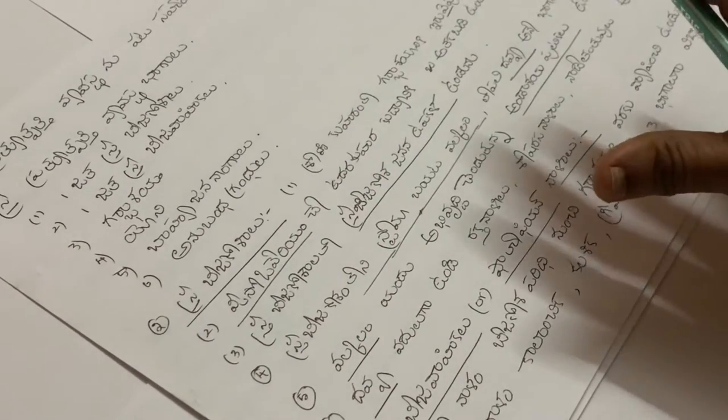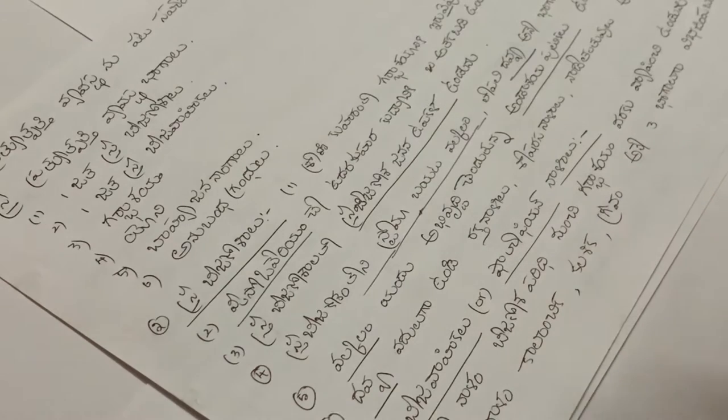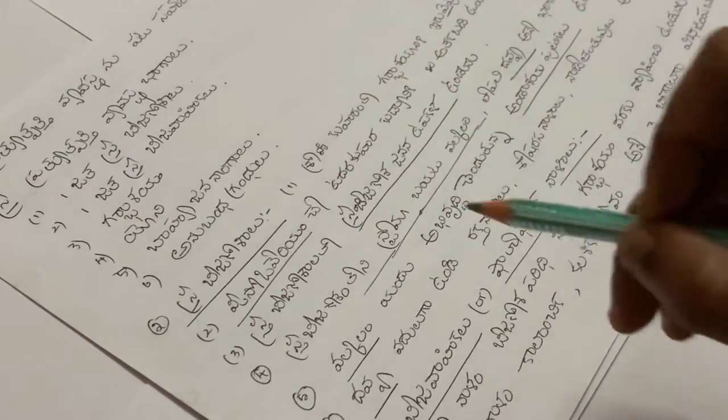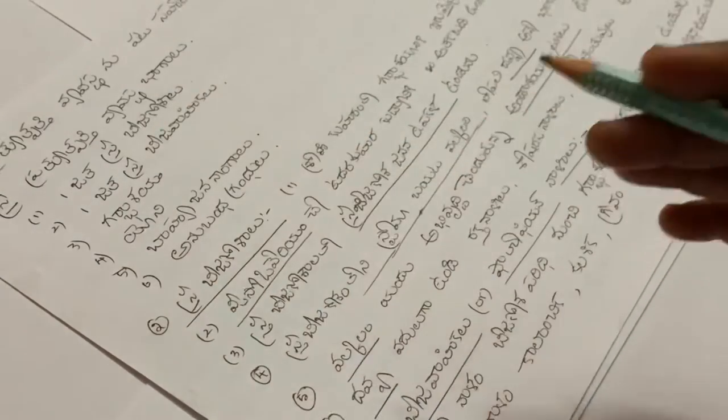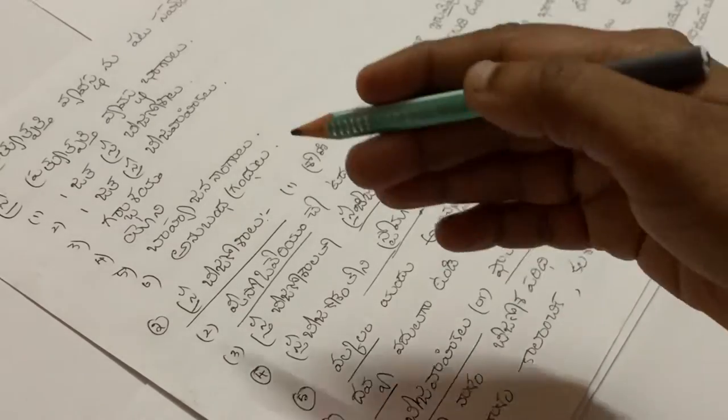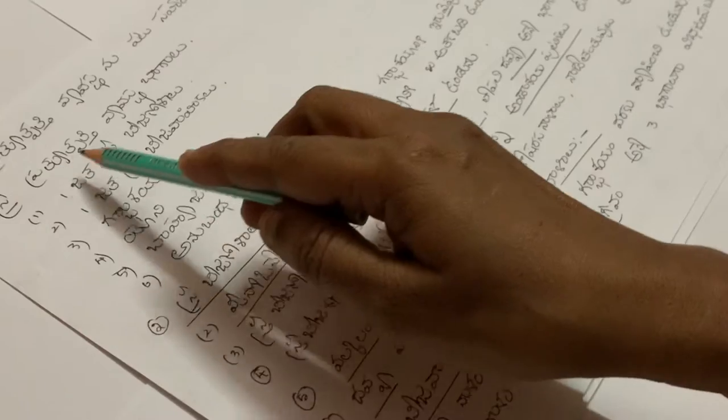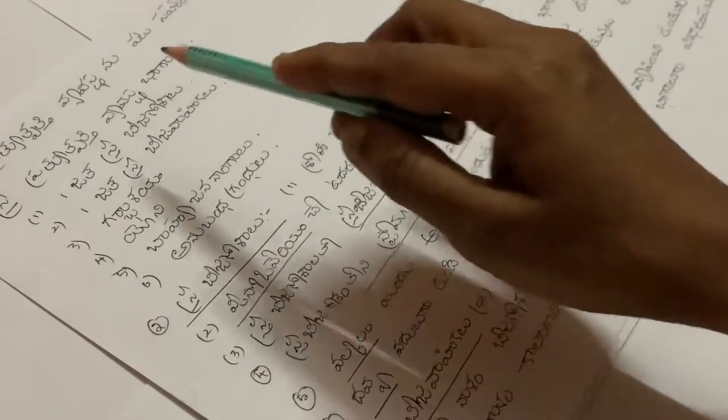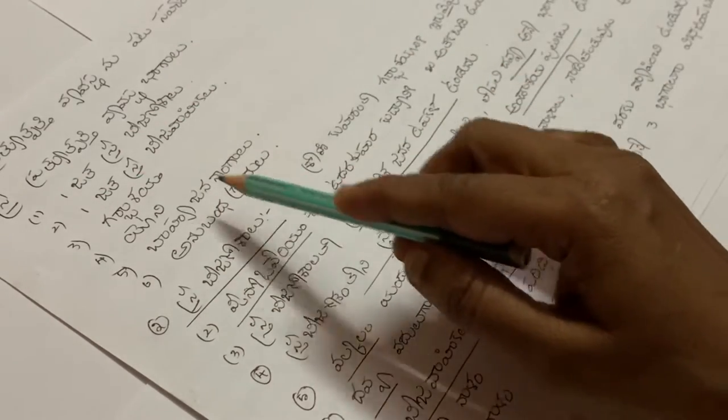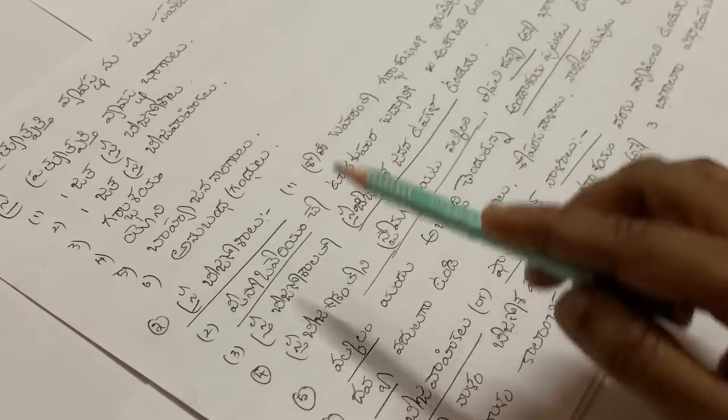How to write the answer properly? There's a link provided for detailed guidance. When writing about Prathvitpattivyavastta, use proper side headings and structure. Divide into sections systematically to ensure full marks and comprehensive coverage.